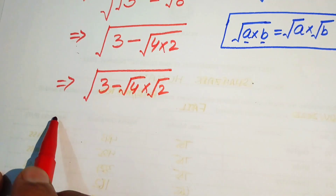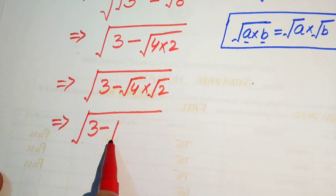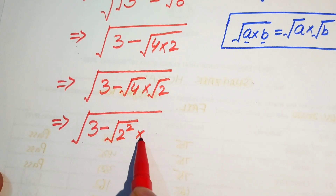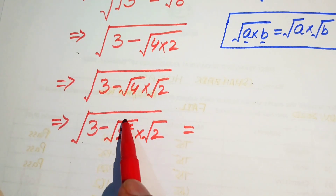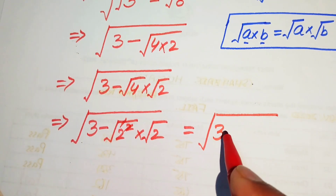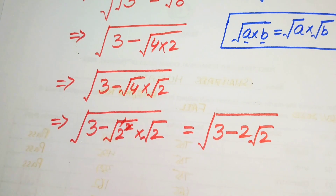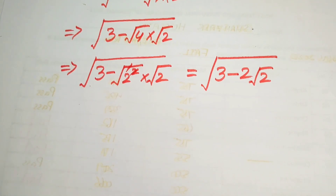After this step, we rewrite 4 in this form: square root of 3 minus, we write 4 as 2 squared, multiplied by square root of 2. Here you see that this 2 and the square root cancel, and we obtain 3 minus 2 times square root of 2.